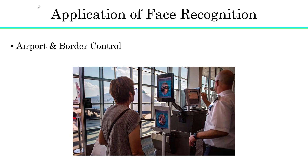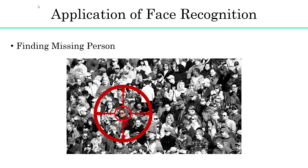Face recognition can also be used to find missing persons and victims of human trafficking. Suppose a missing individual is added to the database — in that case, law enforcement can be alerted as soon as they are recognized by the face recognition system, whether it is at an airport, retail store, or other public spaces.